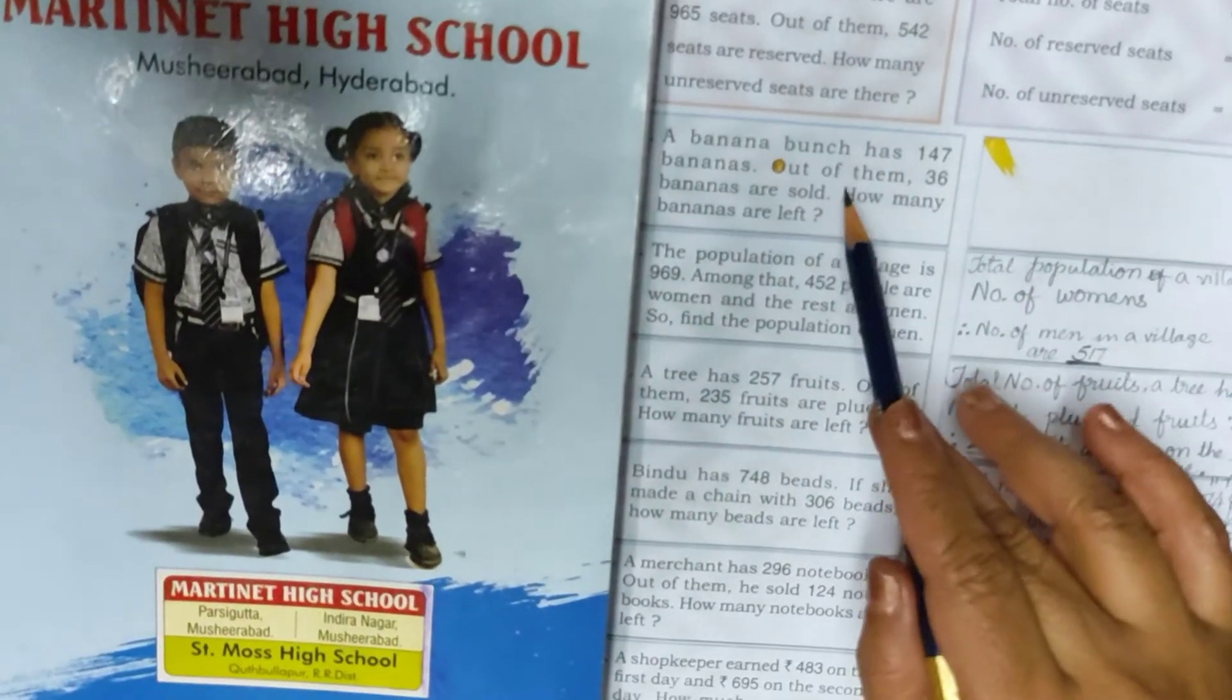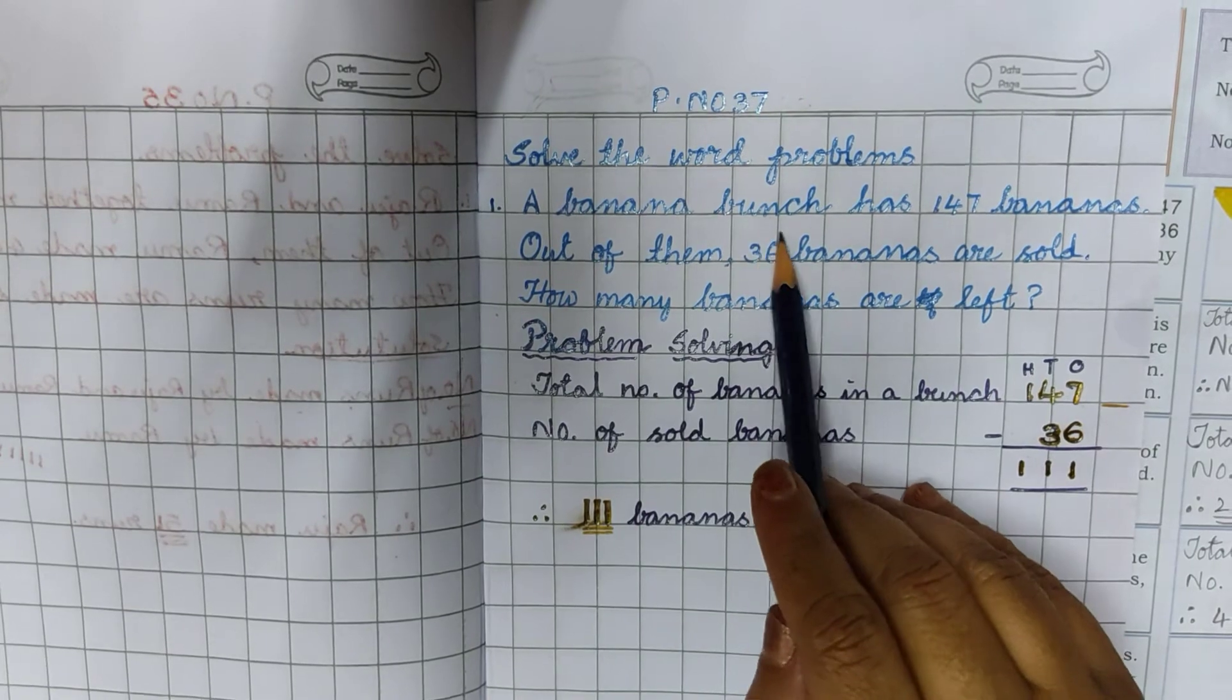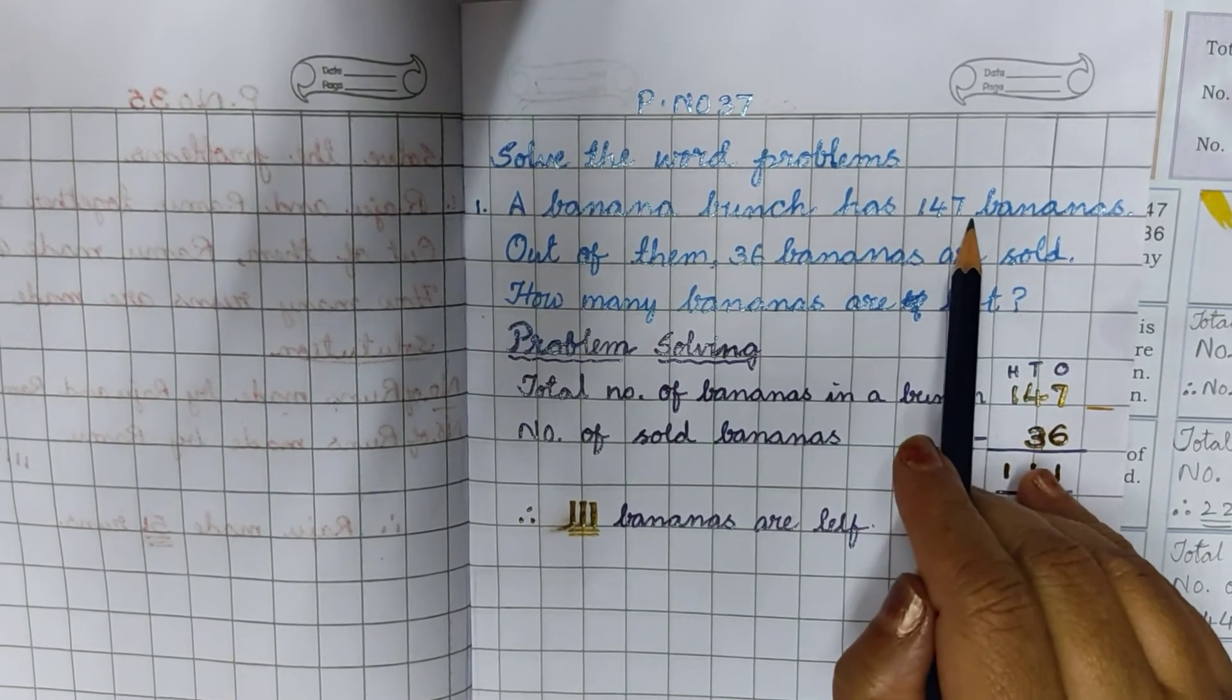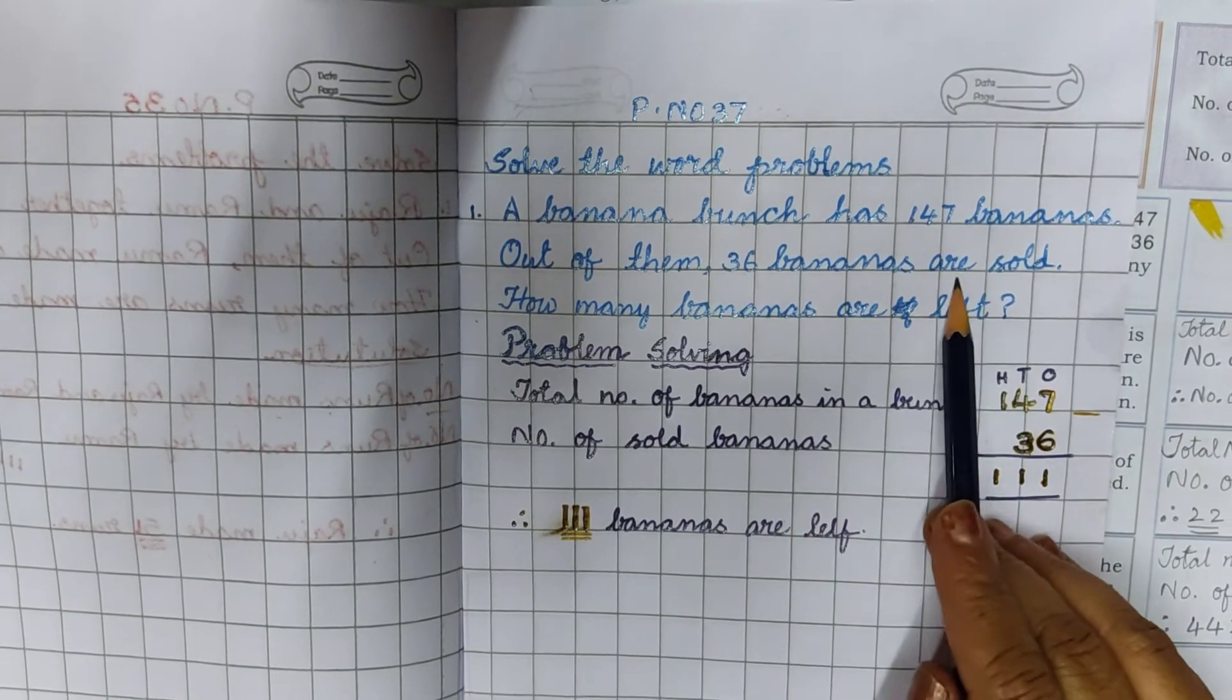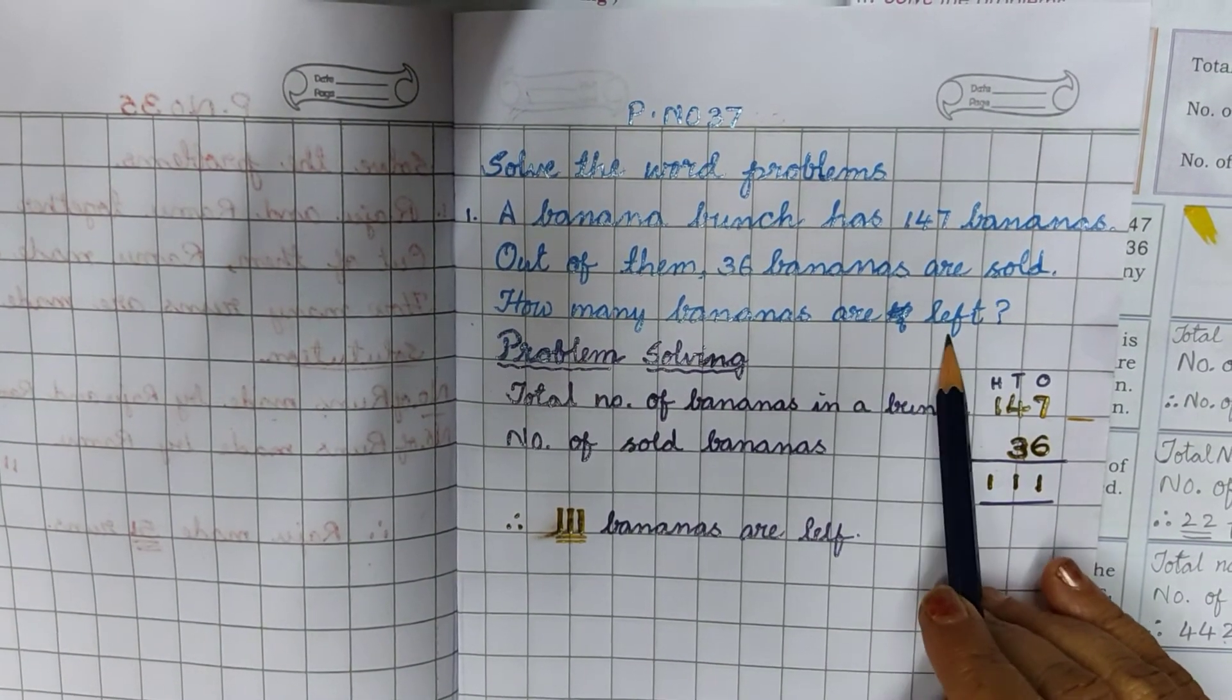Solve the problems. A banana bunch has 147 bananas. Out of them, 36 bananas are sold. How many bananas are left?